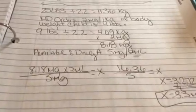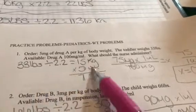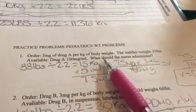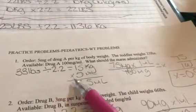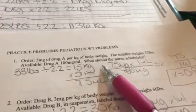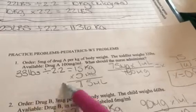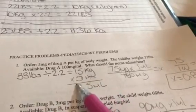It is a couple more steps to do the pediatric math, but let me show you guys a couple more examples here that I've already done. The order is 5 milligrams of drug A per kilogram of body weight. The toddler weighs 33 pounds. Available, we have drug A, 100 milligrams over 1 milliliter. 33 pounds, we have to divide by 2.2, so we get 15 kilograms times the 5.